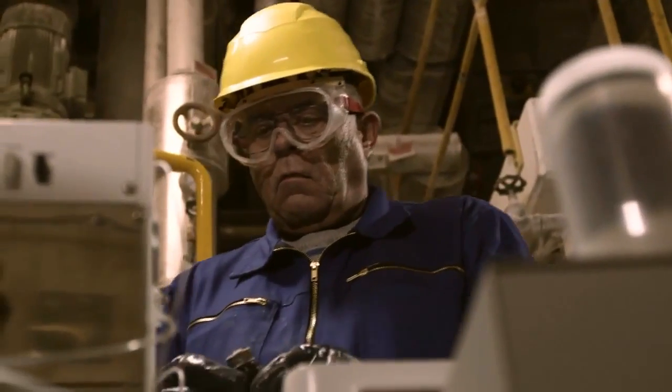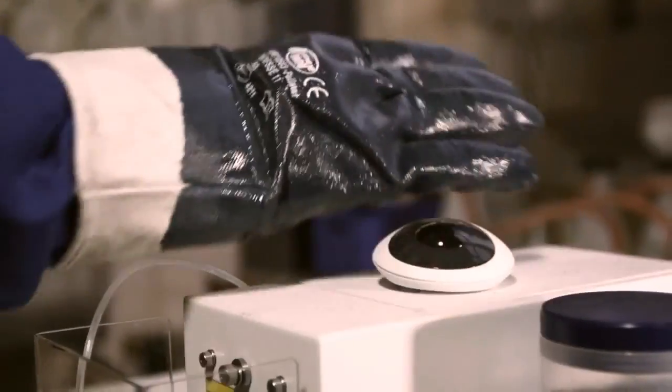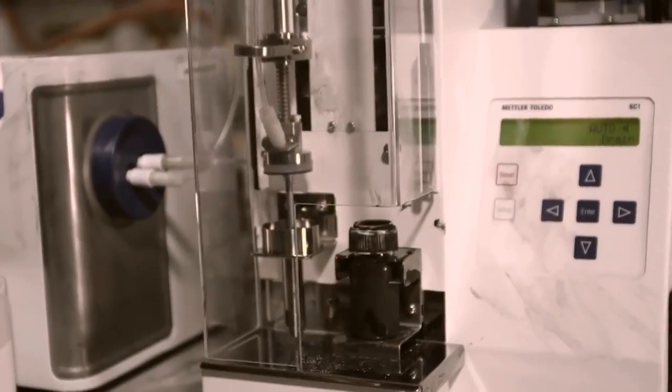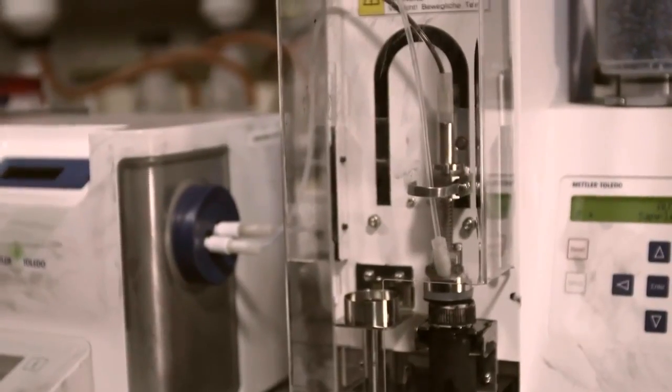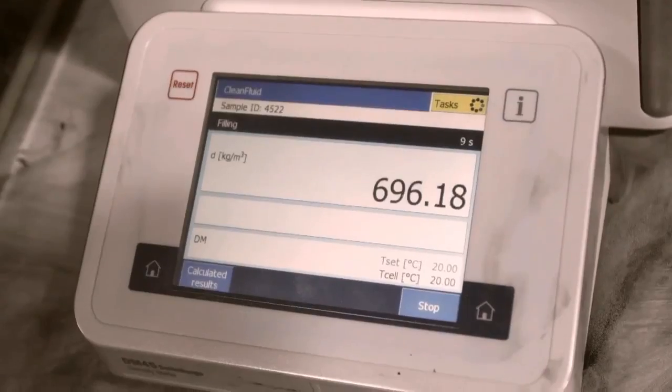With ErgoSense and powerful automation, the operator can avoid direct contact with aggressive and toxic chemicals. A simple hand movement is all it takes to determine API gravity or concentration of a liquid.